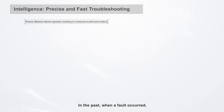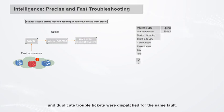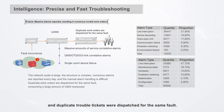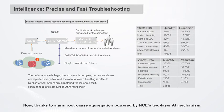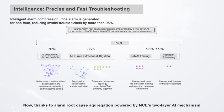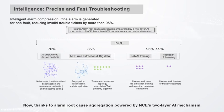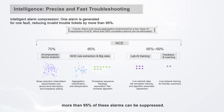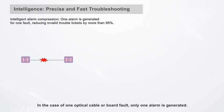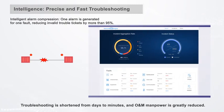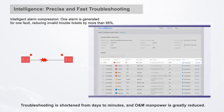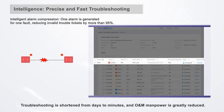In the past, when a fault occurred, numerous alarms were generated and duplicate trouble tickets were dispatched for the same faults. Now, thanks to alarm root cause aggregation powered by NCE's two-layer AI mechanism, more than 95% of these alarms can be suppressed. In the case of one optical cable or board fault, only one alarm is generated. Troubleshooting is shortened from days to minutes, and O&M manpower is greatly reduced.